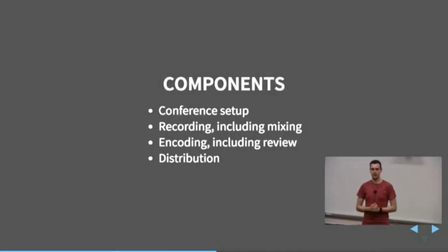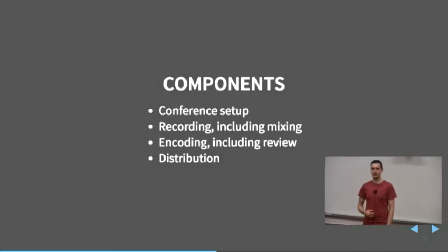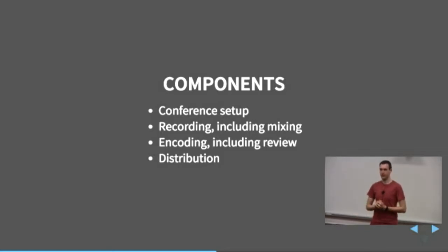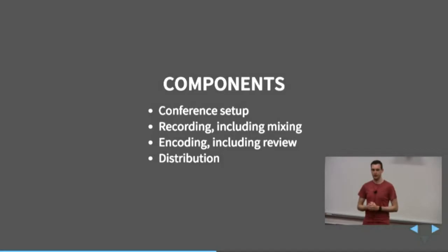So as with the existing setup, these are the main components I see we need. Something to do with conference setup — EventStreamer is really good for that and already does it, we might just need to modernize it a bit. Then there's the recording, which includes the mixing, so we need something to replace DVSwitch. Encoding — the single bash script was great but let's do something a little bit better. And finally, distribution: we need to be able to upload this stuff to YouTube. For most of these conferences, we aim to have it done the next day. By having a good automated encoding and distribution system, we can get that done a lot easier.